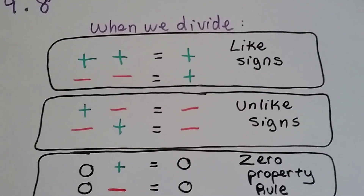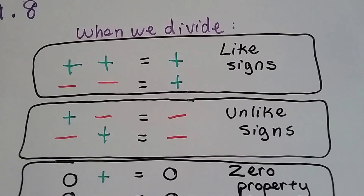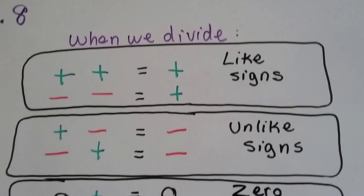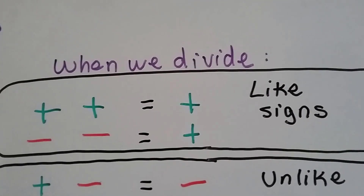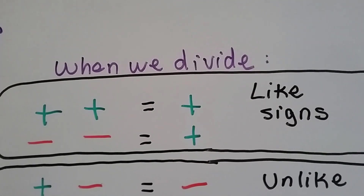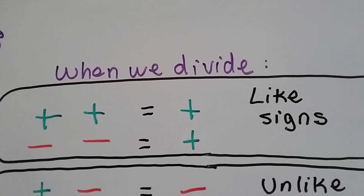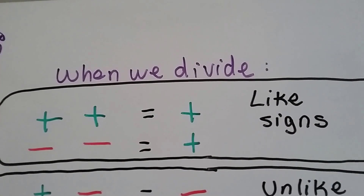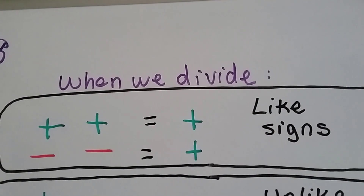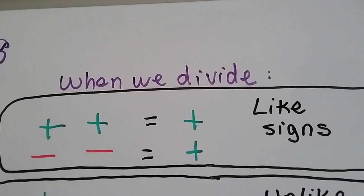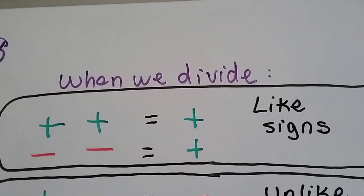Division is the inverse operation of multiplication, so when we divide we have the same rules as when we multiply. When we have two like signs, we're going to have a positive answer. So when we divide a positive by a positive, our answer is positive. And when we divide a negative by a negative, we're going to have a positive because the signs are like.